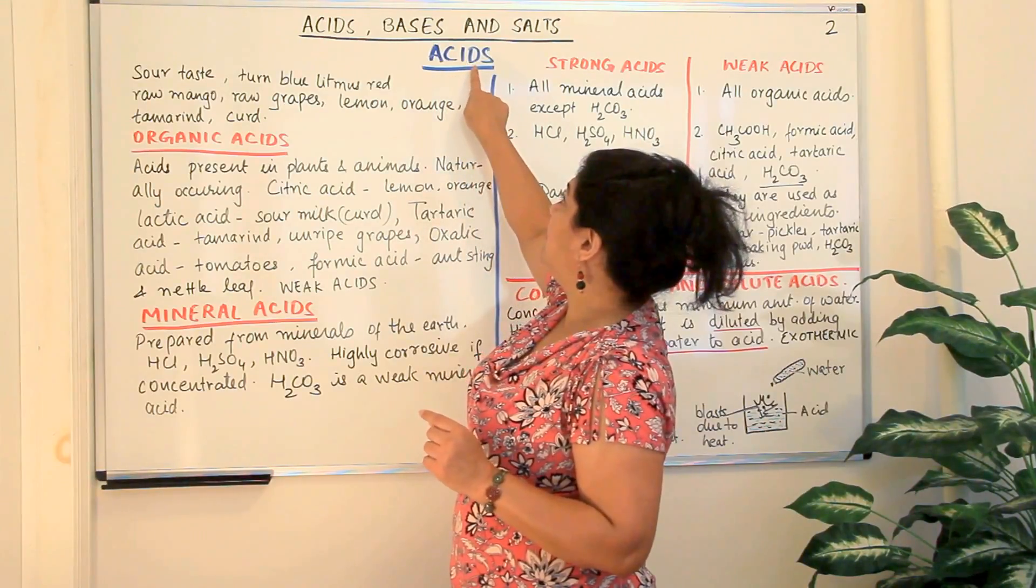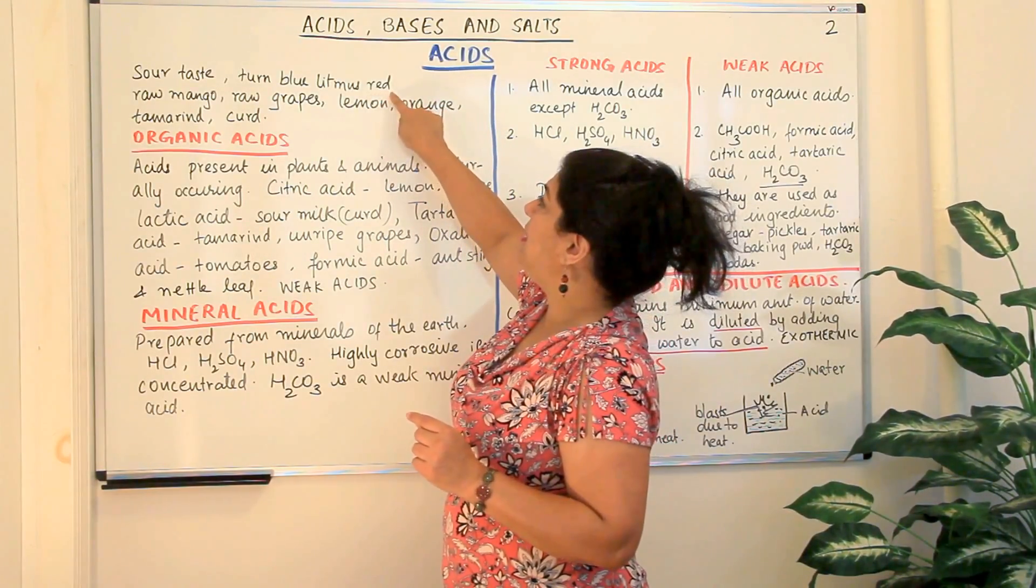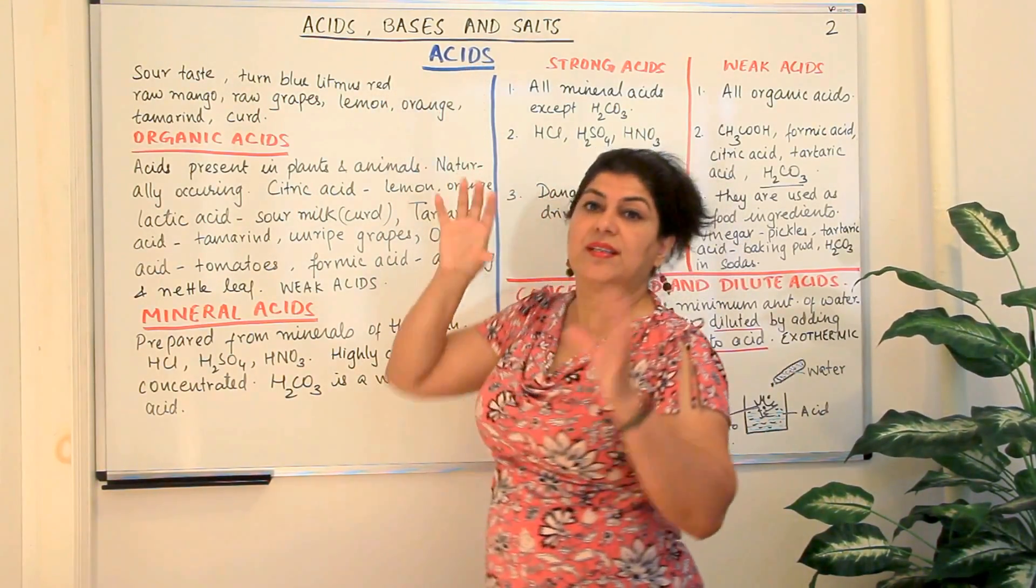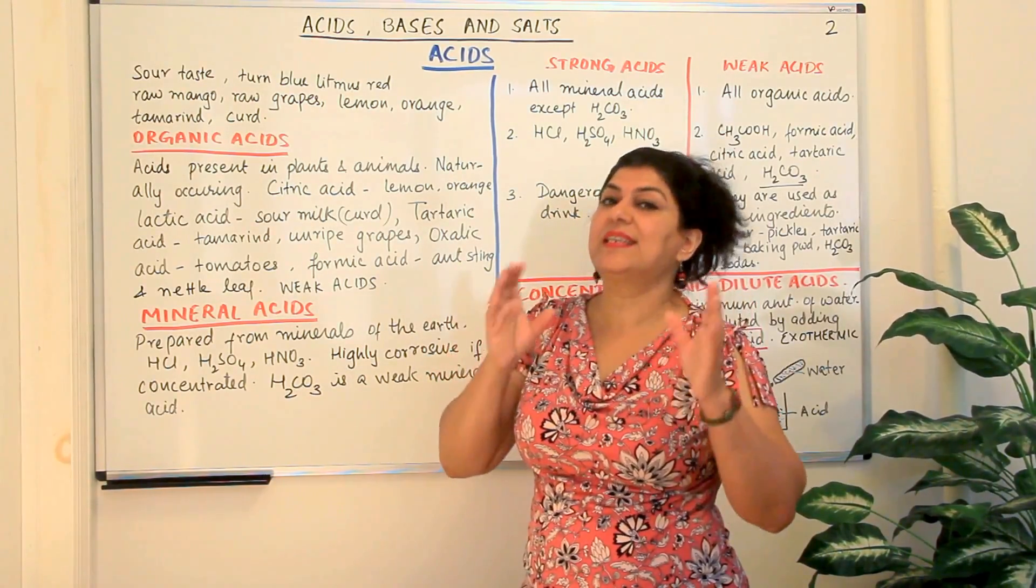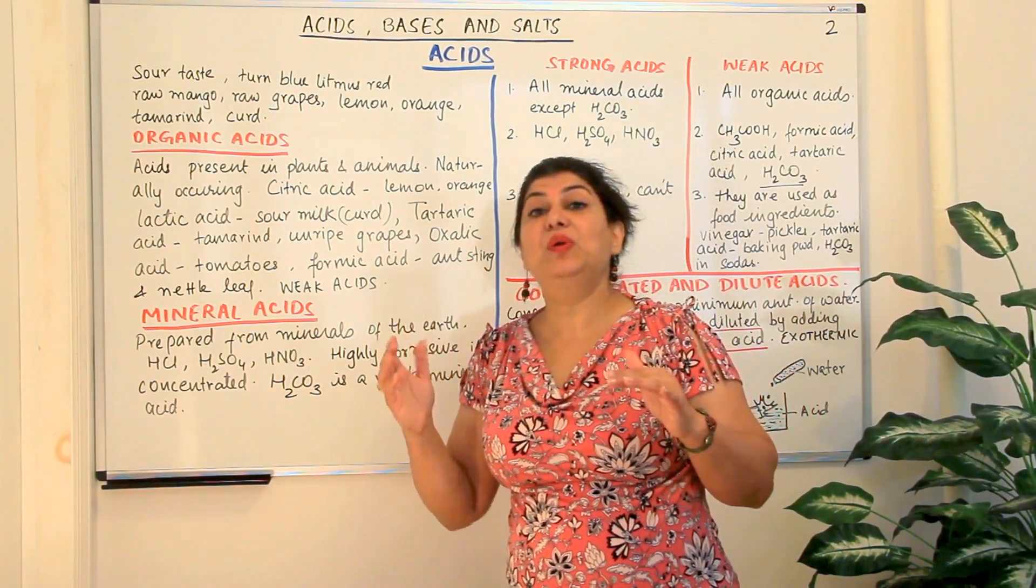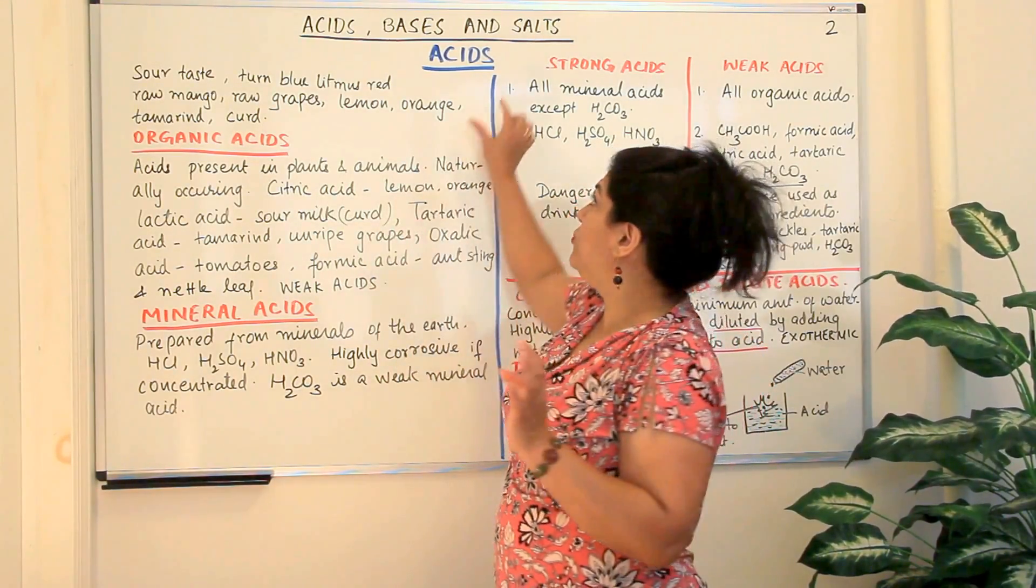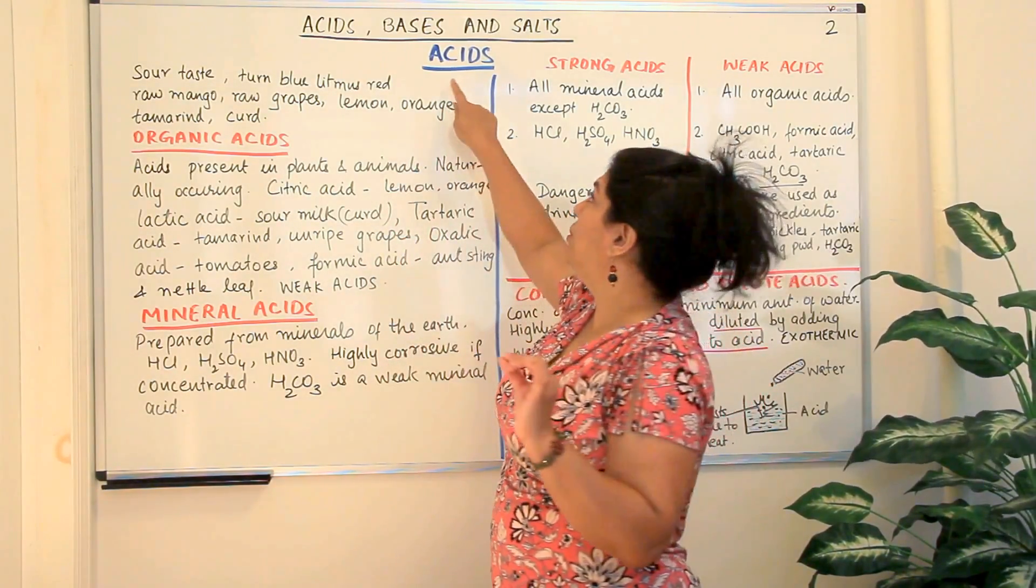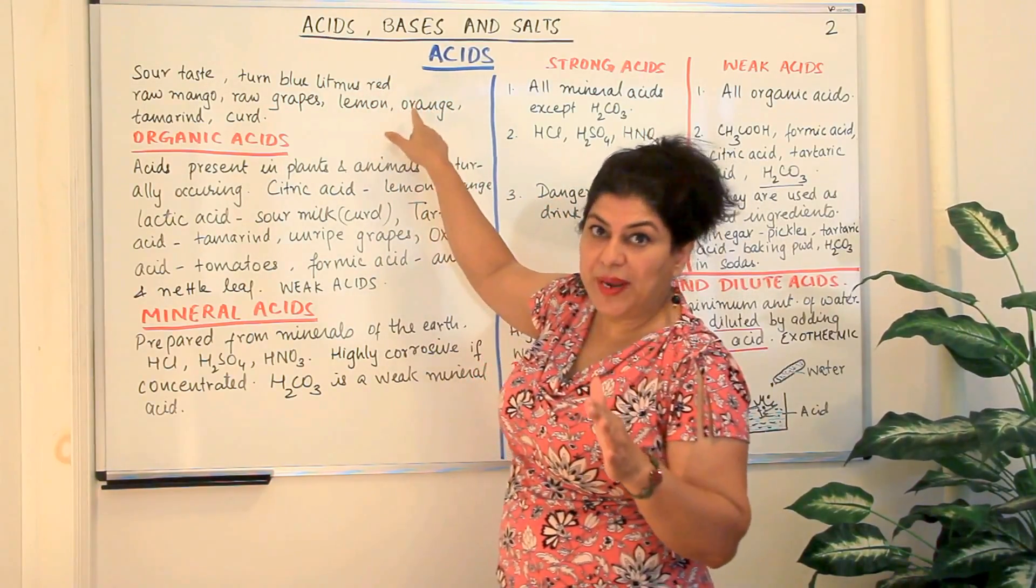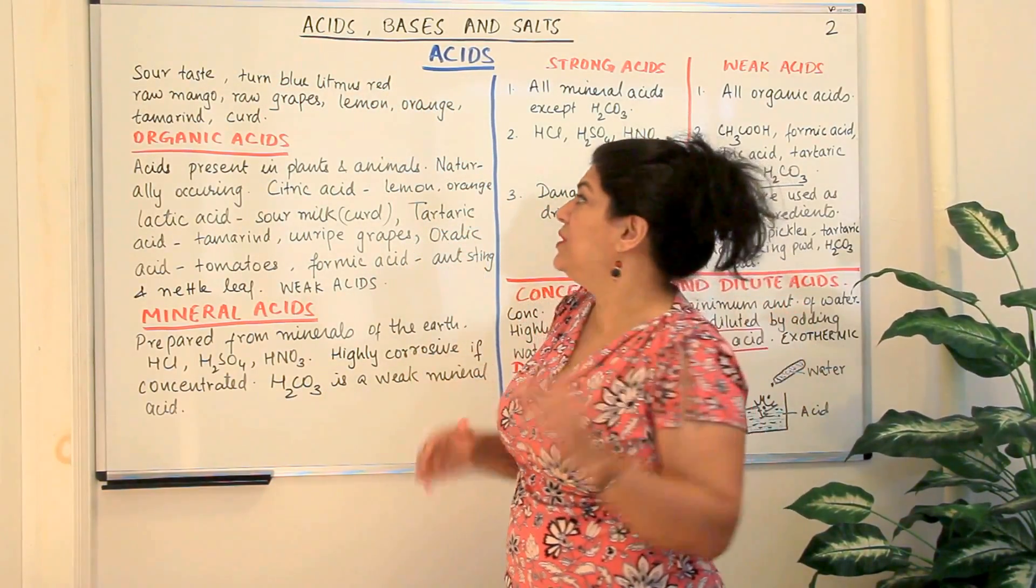Remember acids and red so acid and red the sound matches. Remember litmus turns red in acid and blue in base. B for base and B for blue. So if you match the sounds you will know acids turn blue litmus red and bases turn red litmus blue.